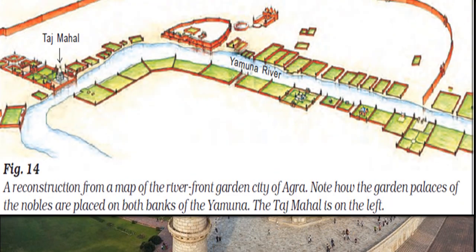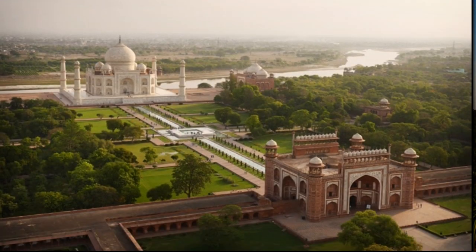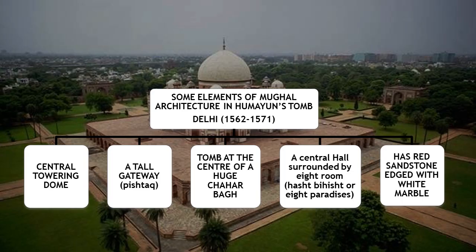This is another picture showing that at the back side of the Yamuna River there are also chahar bags where nobles used to live. Now let's discuss elements of Mughal architecture in Humayun's tomb. A tomb is a structure wherein the dead bodies of important people are buried.